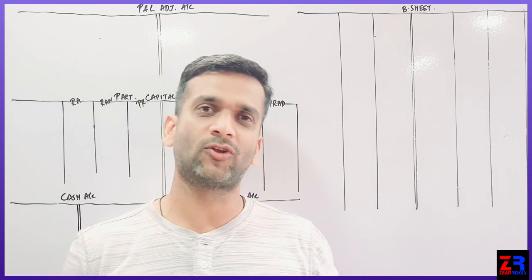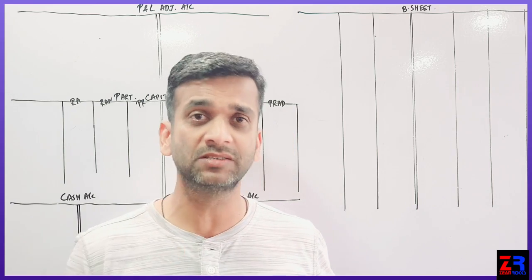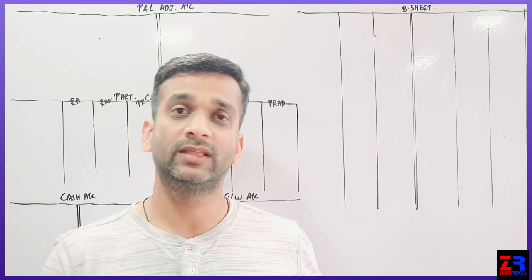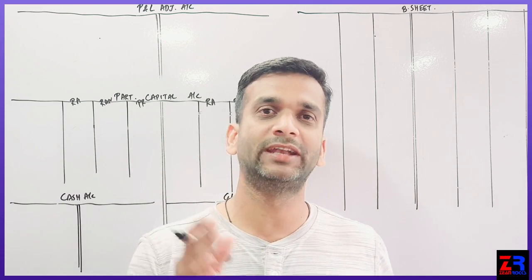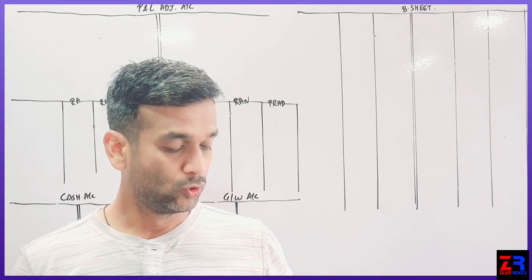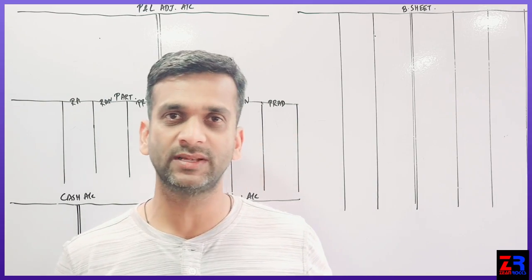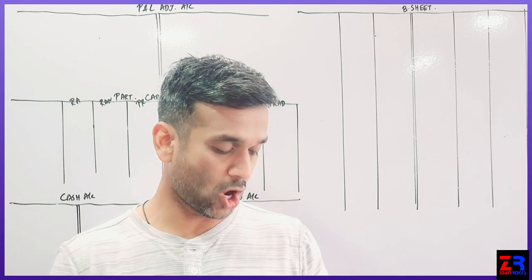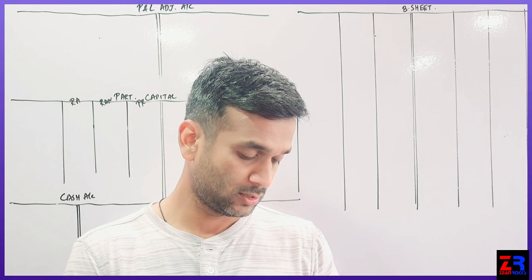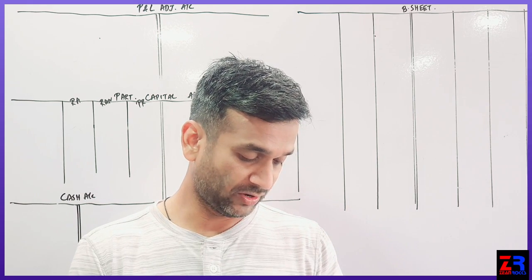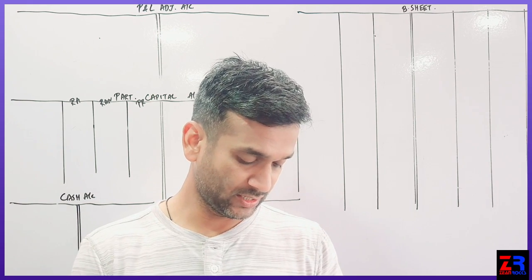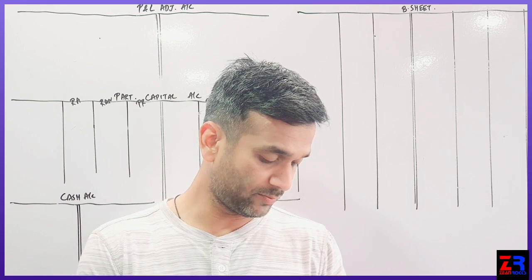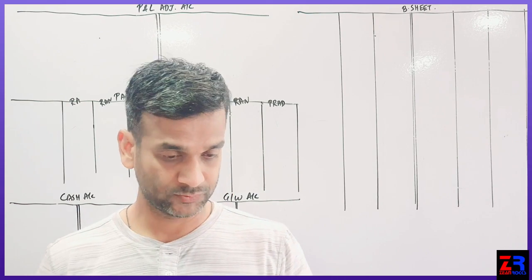Now I am taking this problem from the textbook because the topic is very simple and already if you have understood admission of partner, then the steps, then the procedure to solve retirement of partner are the same. When you look at the question, the first step will be reading the adjustments and doing tick markings. Goodwill, second adjustment is stock, furniture, machinery, debtors, creditors, tick mark. You have to do it, tick mark.